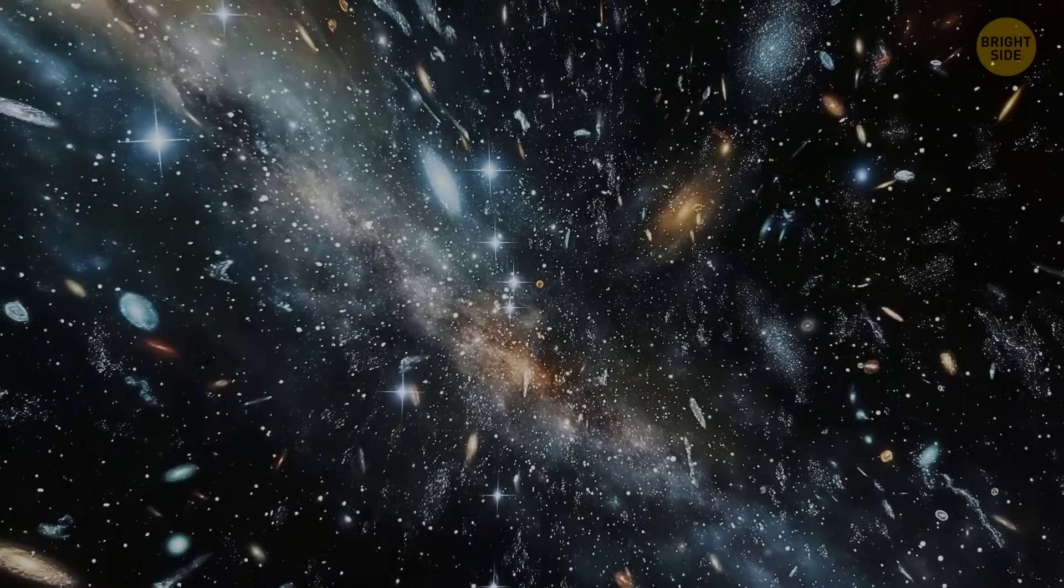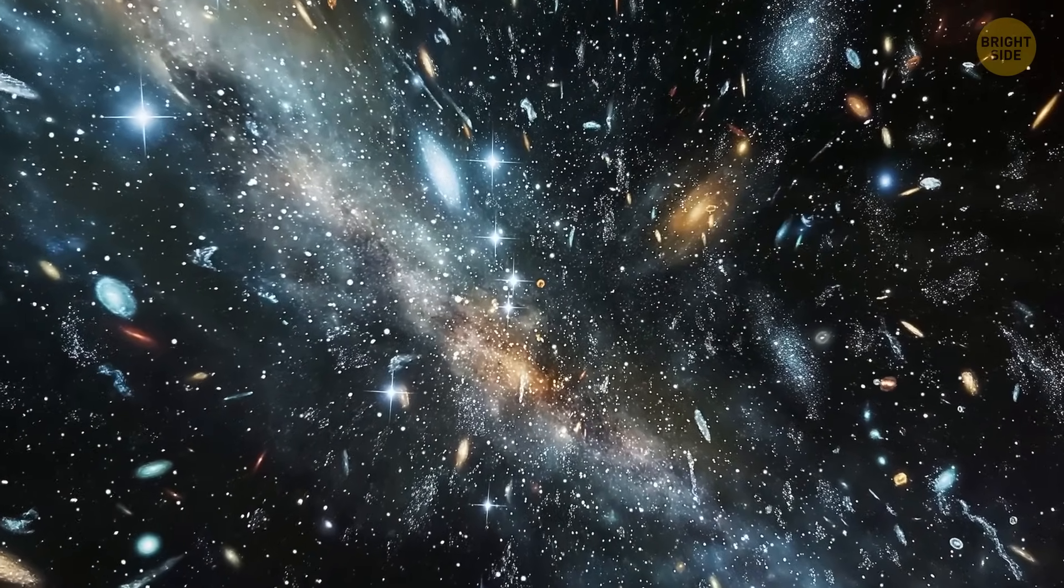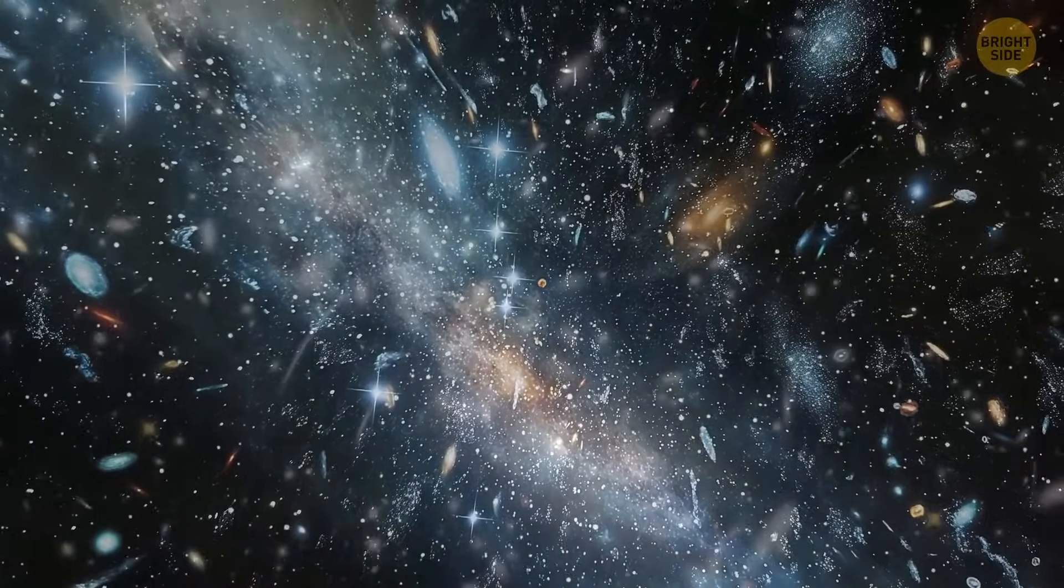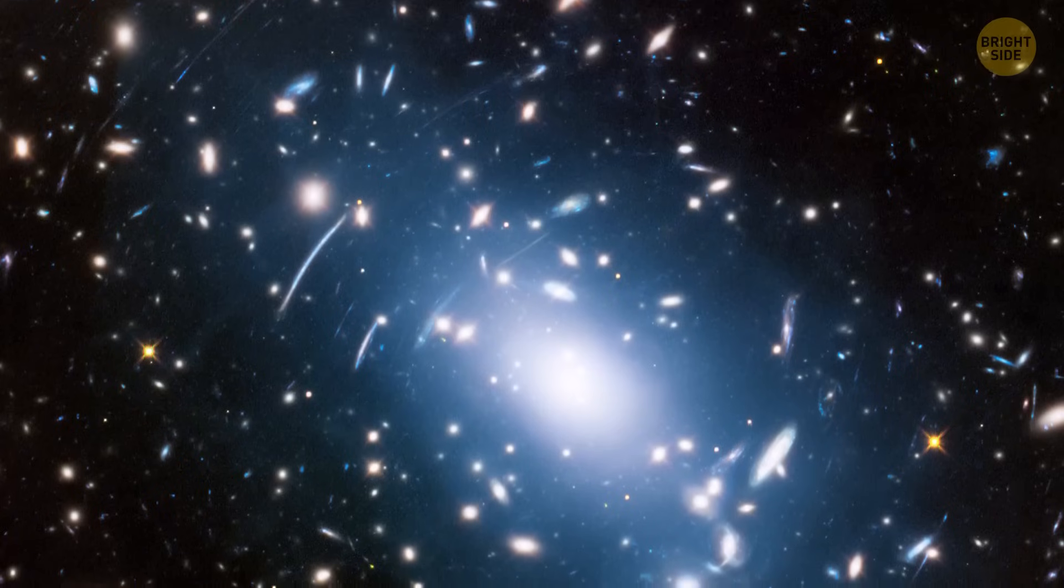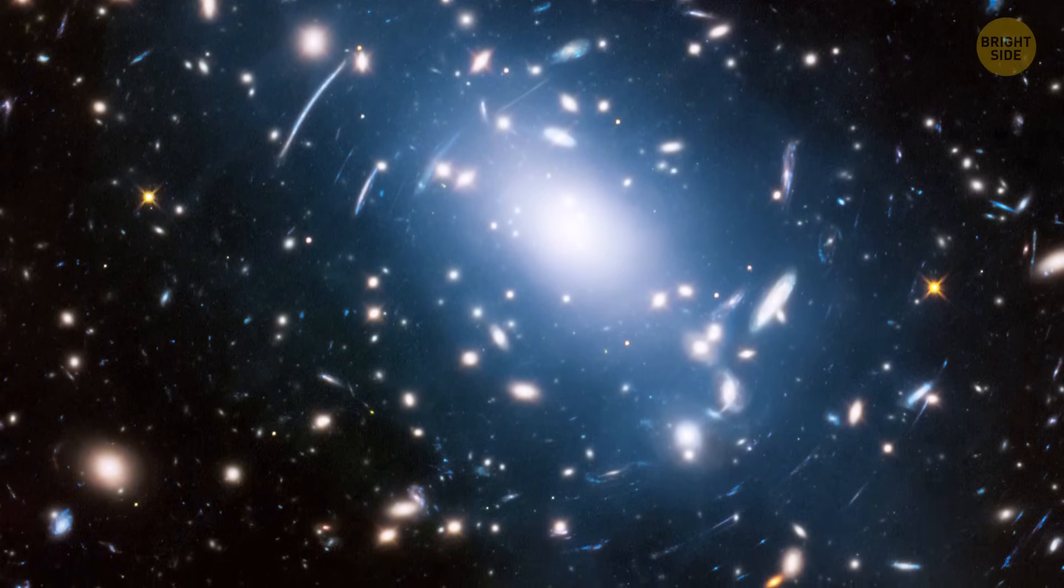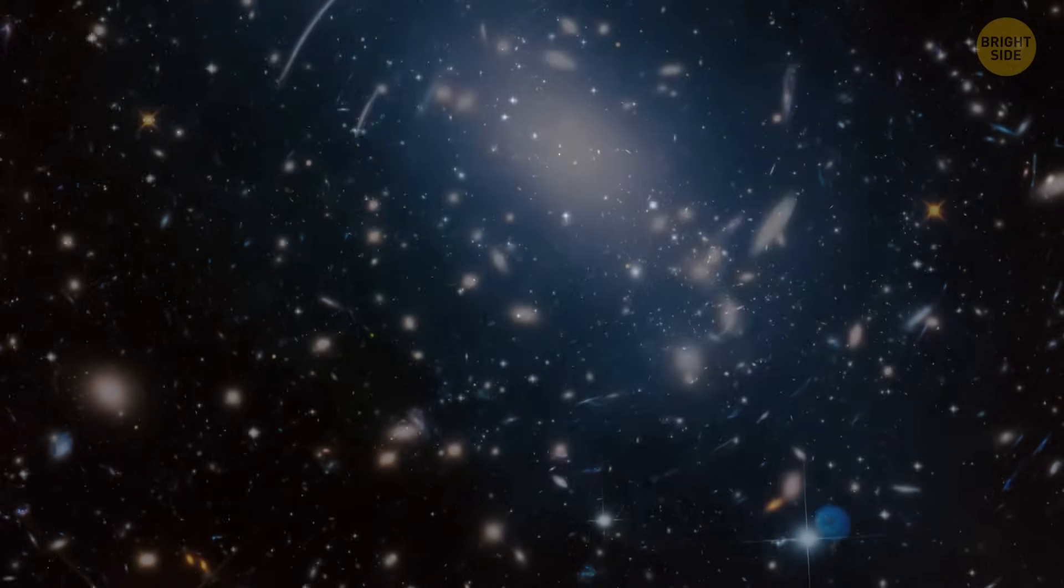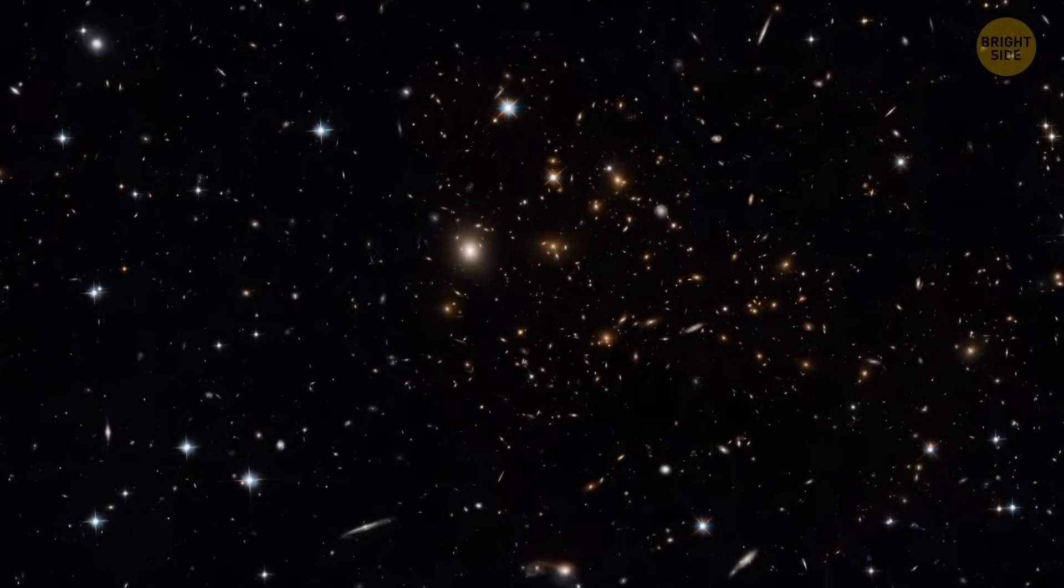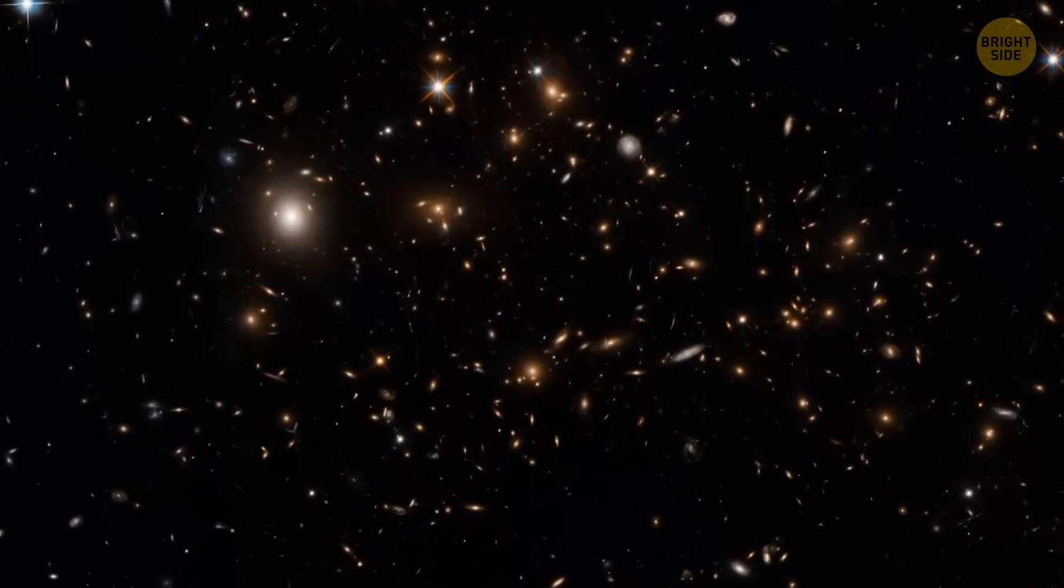So first of all, our galaxies wouldn't exist at all without it. We know that the gravity of different objects can hold them together. But when scientists studied galactic clusters and summed up all the objects in them, they realized that something doesn't add up. All the visible mass in galaxies, like stars and gas, wasn't enough to keep these clusters bound together. They moved so quickly that they should fly apart.